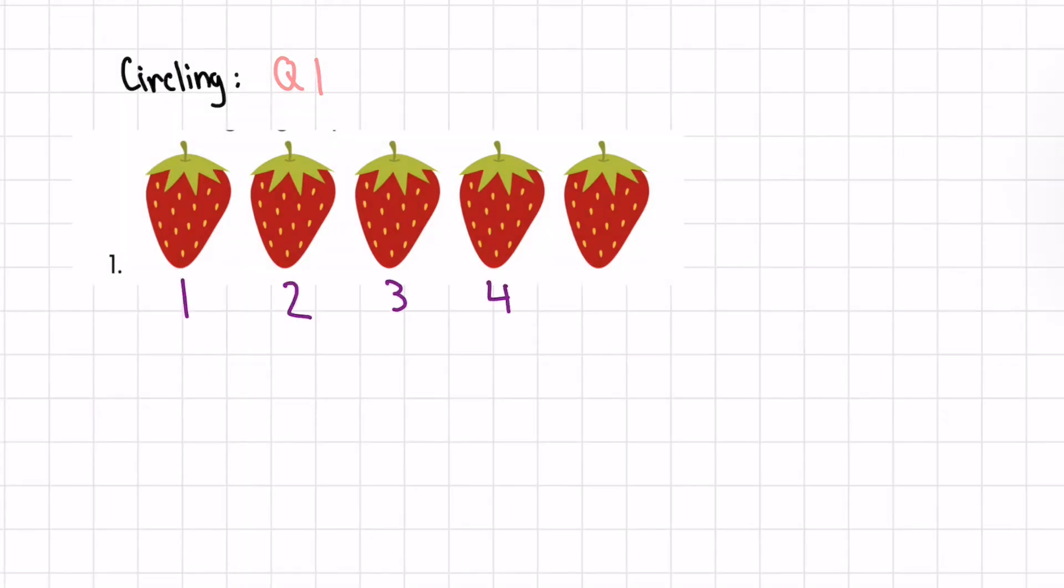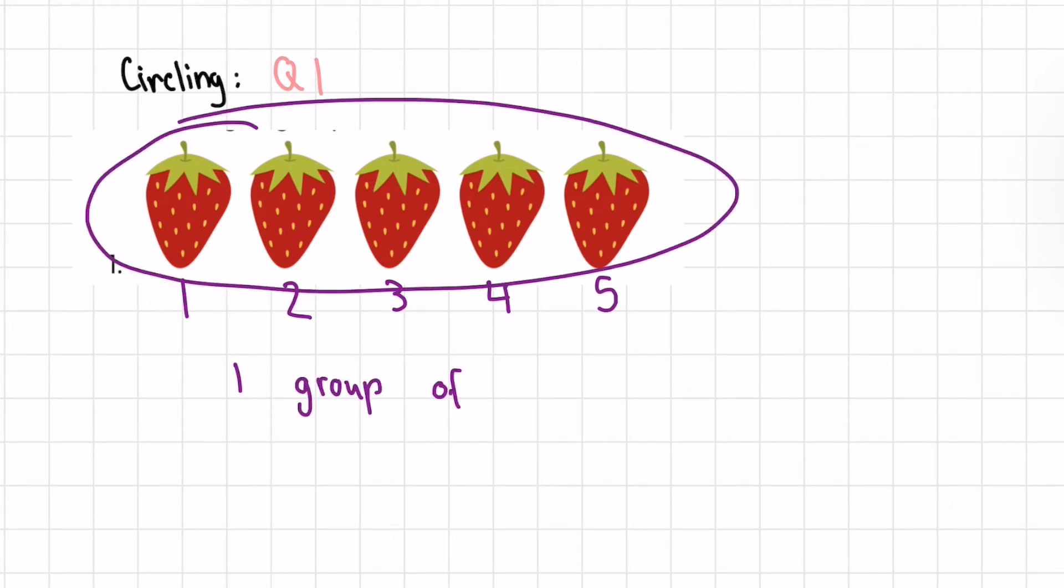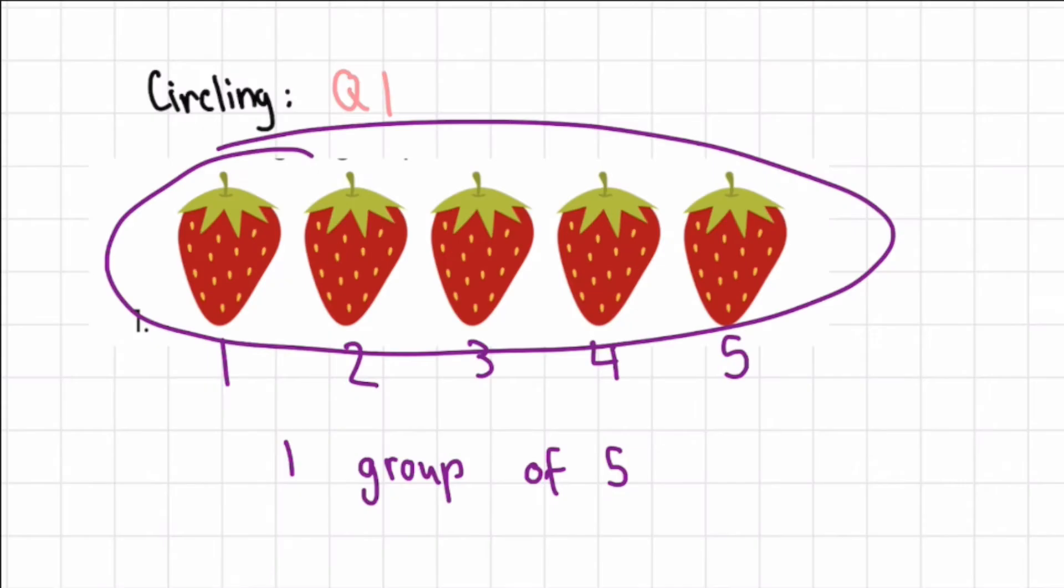One, two, three, four, five. Here is one set of five. We can circle this. There are no more strawberries, so there is one group of five.